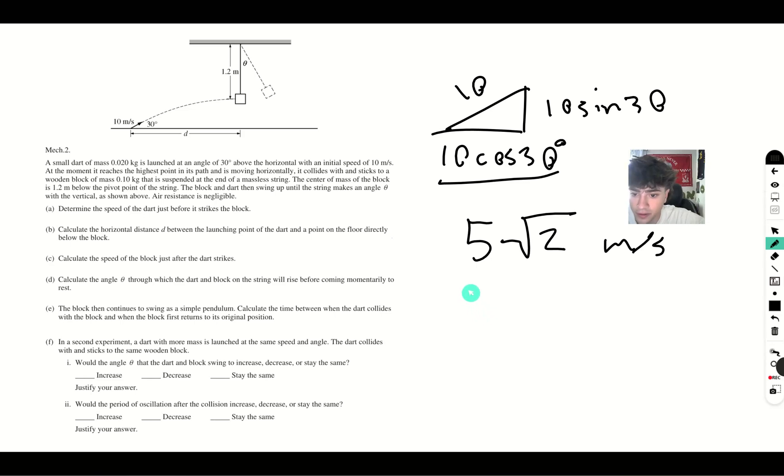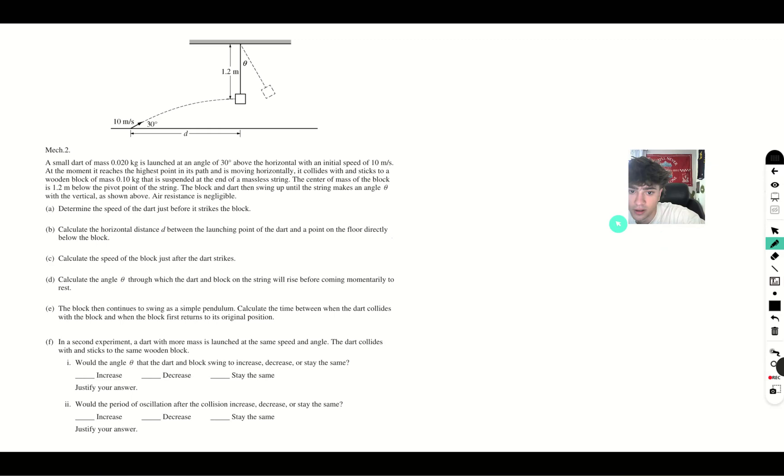We know that v final is equal to v initial plus at, and our v final is going to be 0 because our vertical velocity is going to have become 0. Our v initial is going to be 5 plus at, which is minus 10t. So t becomes half a second. Since we know that our velocity is 5 root 2, our distance is going to be 5 root 2 divided by 2. There's your distance in meters.